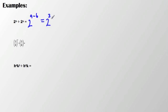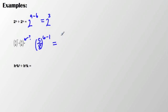Let's look at a couple of examples. I have 2 to the 9th divided by 2 to the 6th, which means I keep my base 2, subtract my exponents, and my answer is 2 to the 3rd. Now I have 5 eighths to the 6th divided by 5 eighths to the 1st. I know the quotient of powers property, so I just subtract the exponents, and my answer is 5 eighths to the 5th.